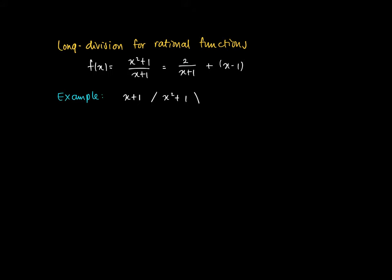Now we put x squared plus 1 and we look at x squared plus 1 divided by x plus 1. We see that x plus 1 fits x times into x squared. We get a remainder term: x times x plus 1 equals x squared plus x. We take a difference, so now we get 1 minus x as the remainder term.